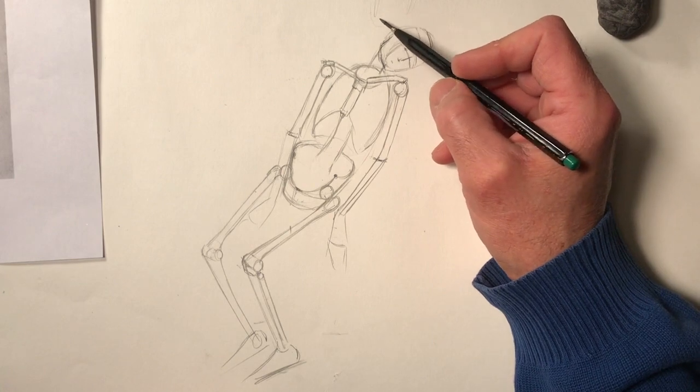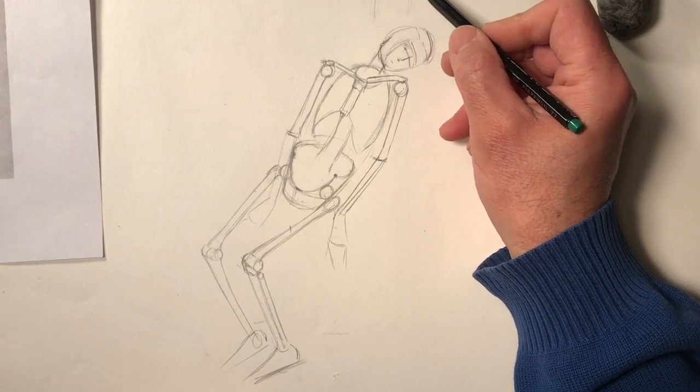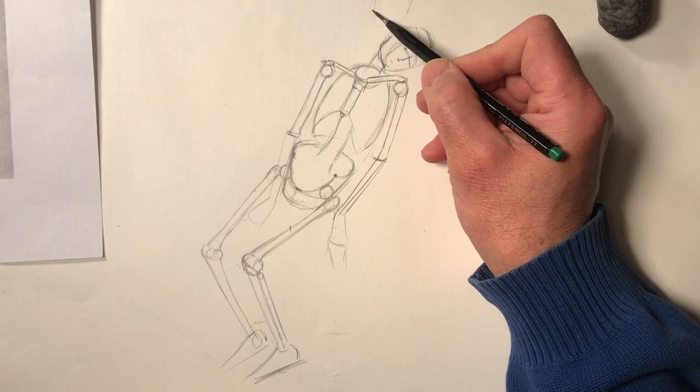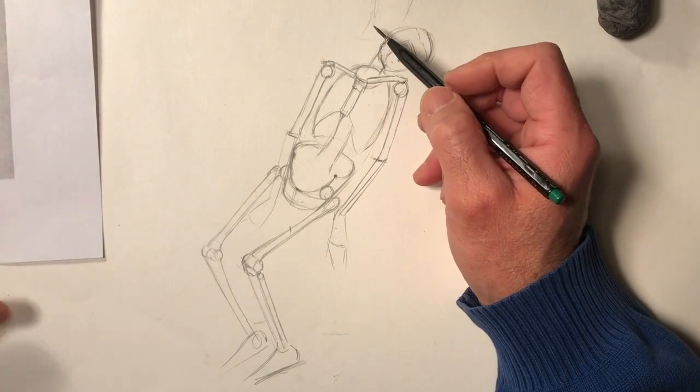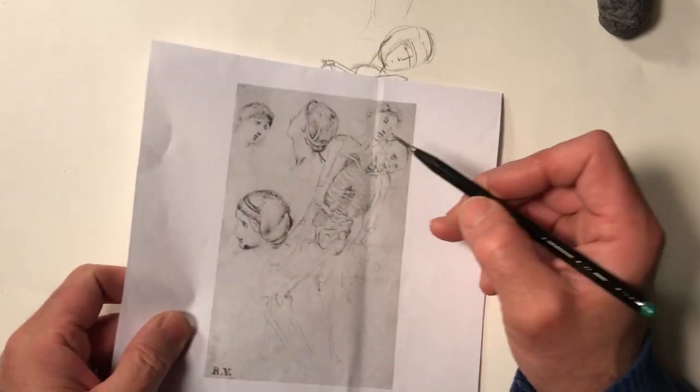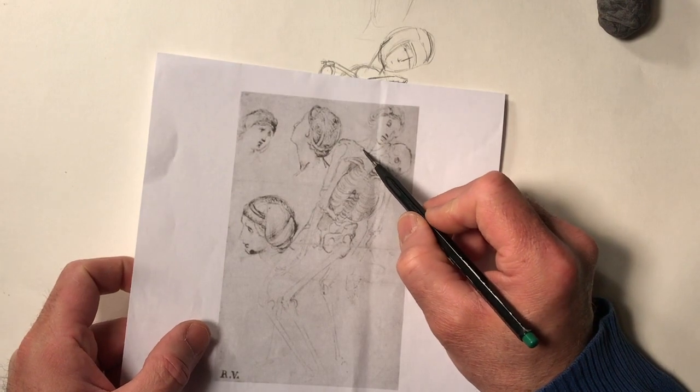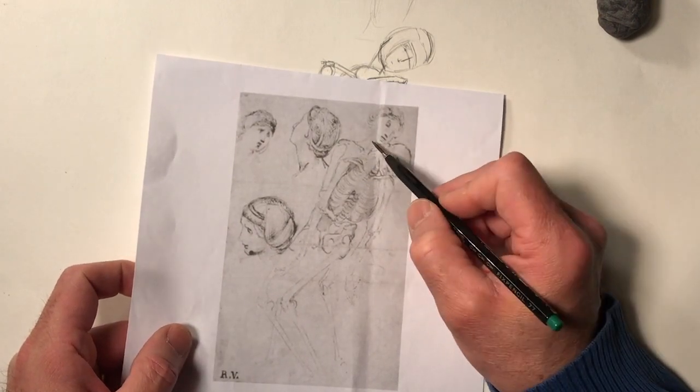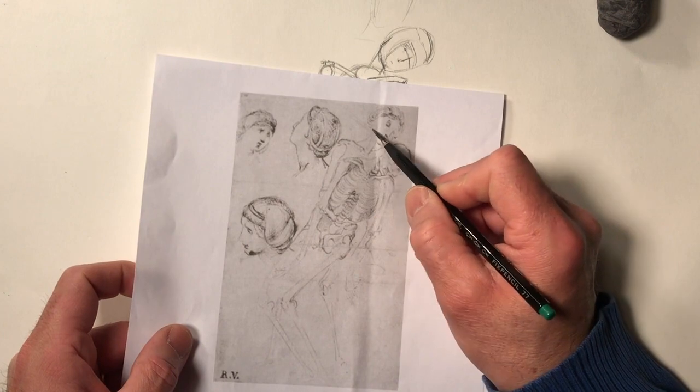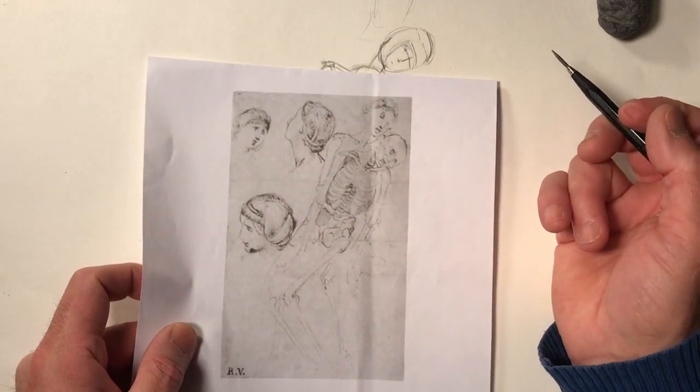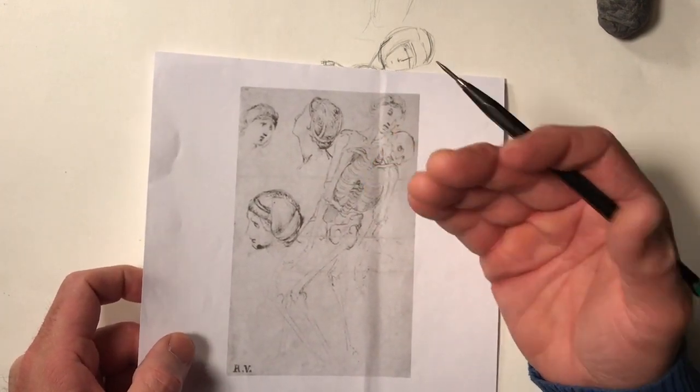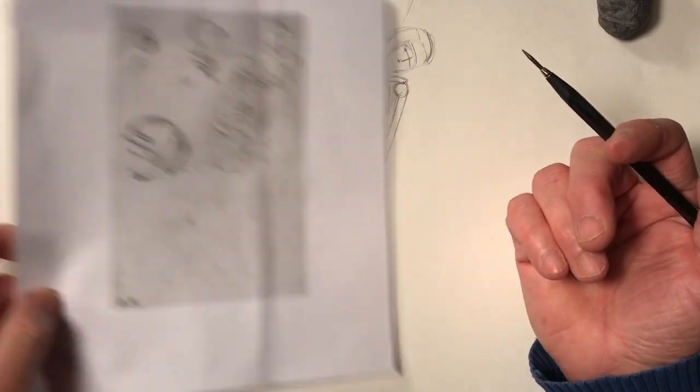And we see that Raphael also hinted at some of the anatomy of the Virgin Mary, the clavicles in here, and her humerus, and then the sternocleidomastoid. So these guys really knew anatomy very well.